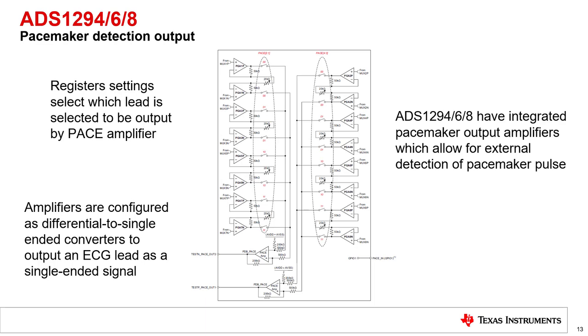Otherwise, in order to measure pace, all ADC channels would have to operate at faster data rates, which allows more noise into the ECG measurement.